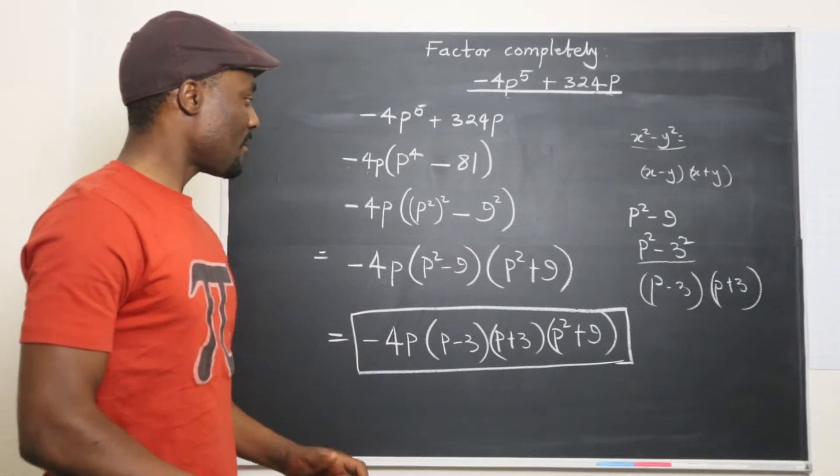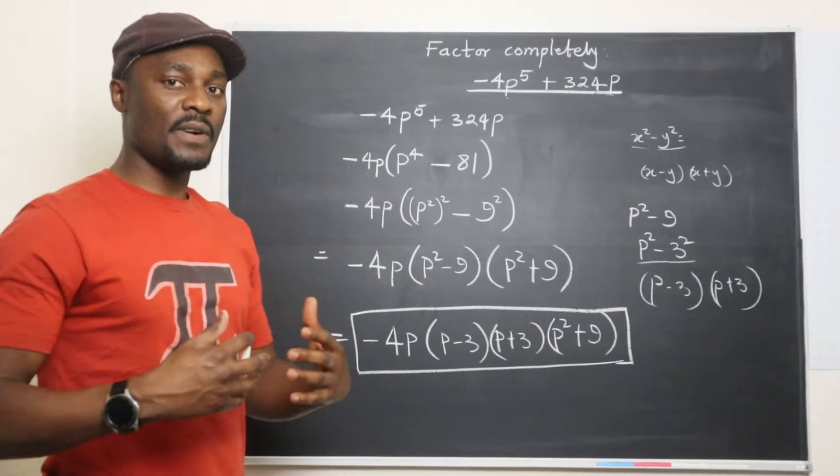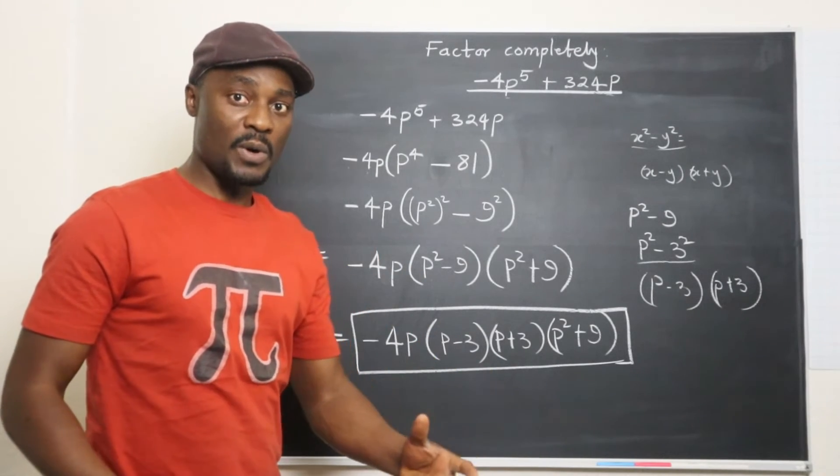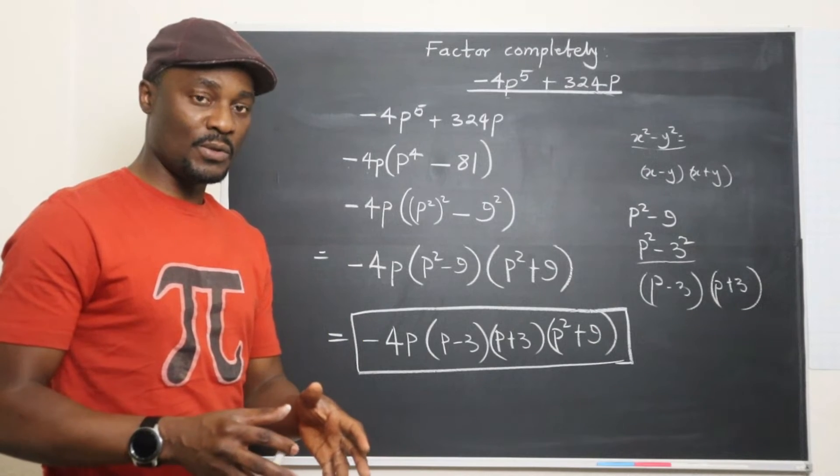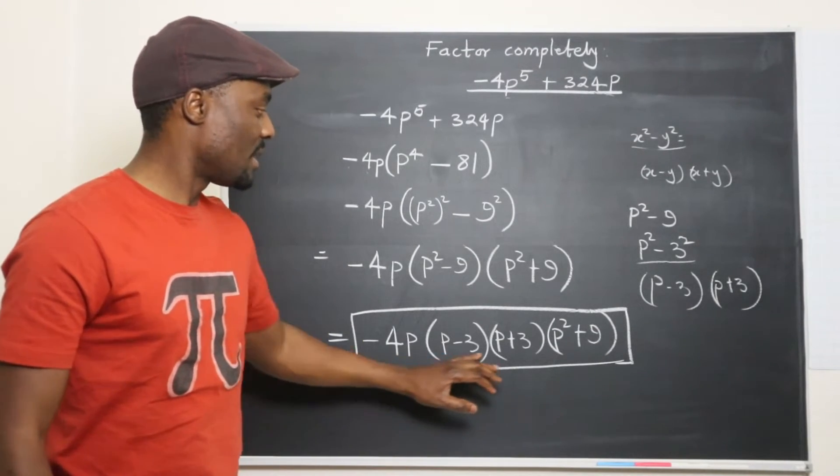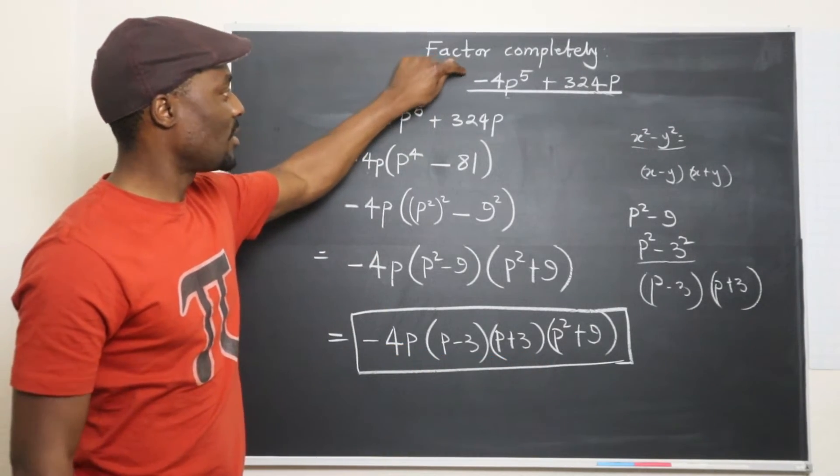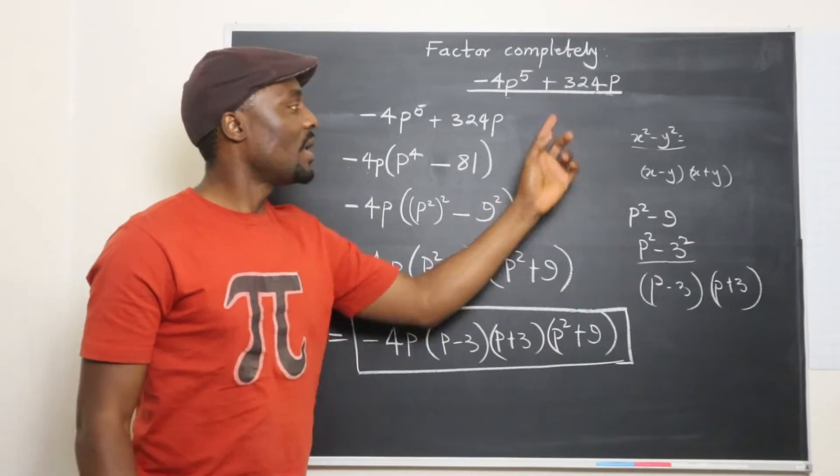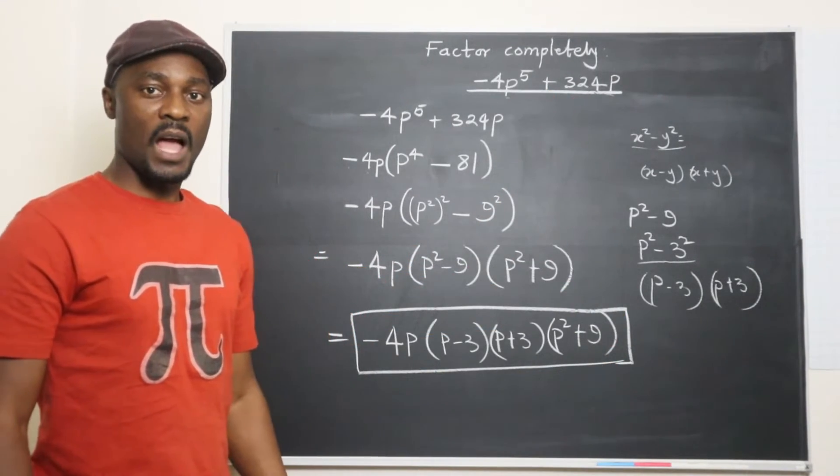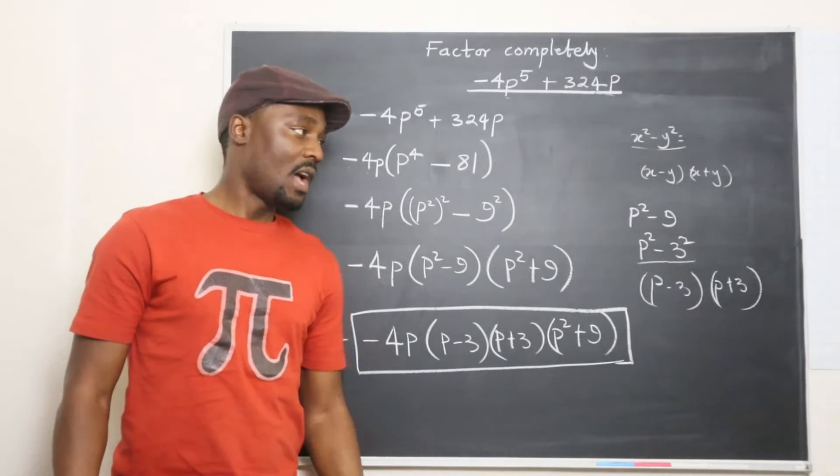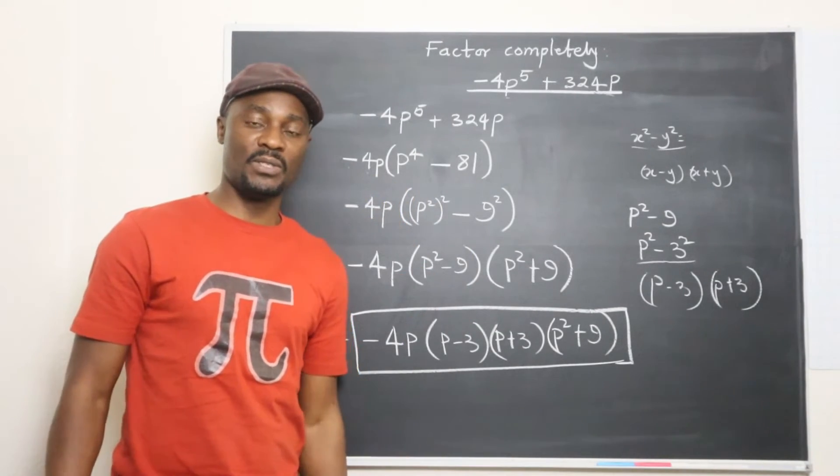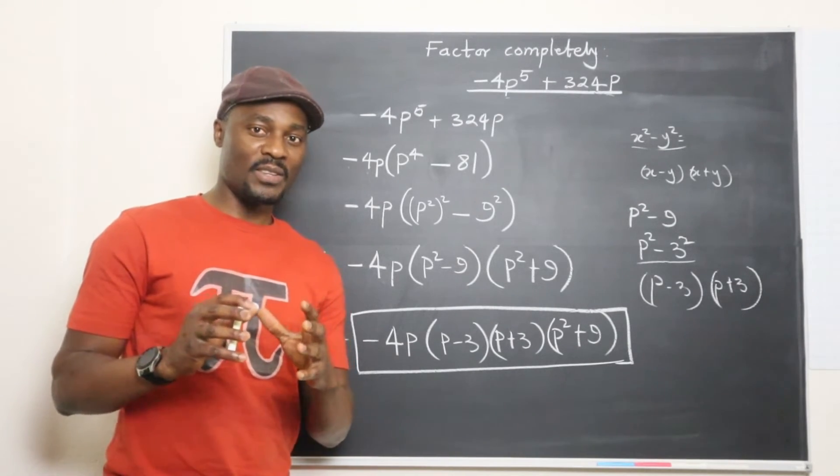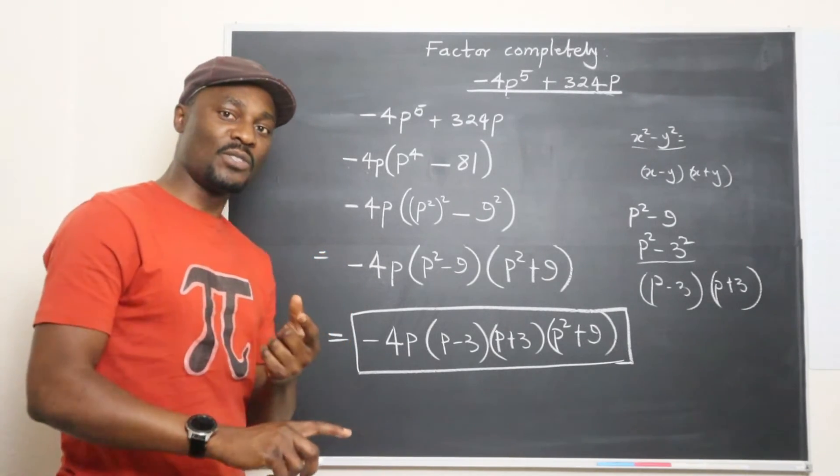Always look out for difference of two squares. There's nothing special about the sum of two squares, but the difference of two squares will always need to be expressed this way. This expression is actually this expression. When you multiply these out, you'll end up getting this back. I hope you learned something in this video. Make sure that you focus on the most important things: difference of two squares.